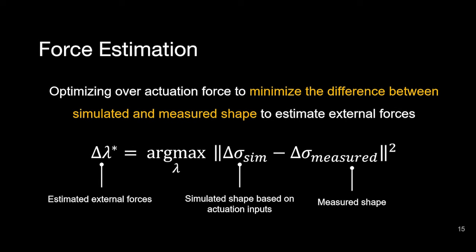Therefore, if we introduce a function, sigma, that maps FEM nodes to robot states, we can then formulate an optimization problem to estimate external forces. In this optimization problem, we will find an optimal lambda, that in this case represents external forces that minimize the difference between the simulated shape and the measured shape. This lambda will thus be an estimate of the external force that best explains the observed deformation.